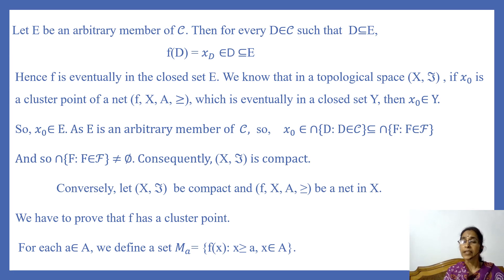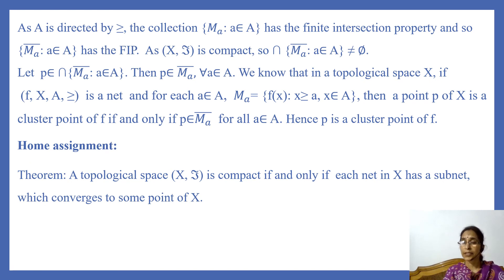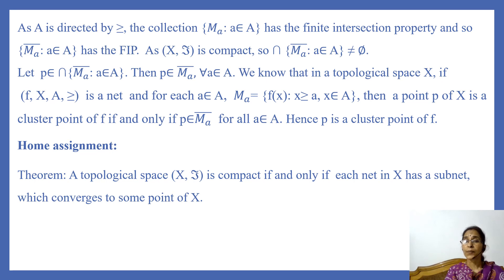Conversely, let (X, T) be compact; we want to show every net in X has a cluster point. Let f(x), (a, ≥), be a net in X. For each a in A, define Mₐ = {f(x) : x ≥ a, x ∈ A}. Since A is directed by ≥, if a' ≥ a then Mₐ' ⊆ Mₐ, so the collection {Mₐ : a ∈ A} has the finite intersection property.